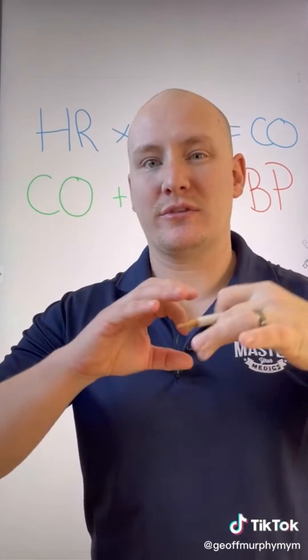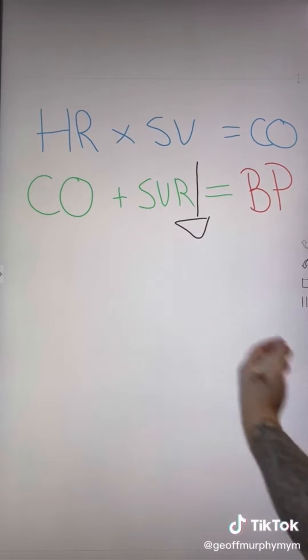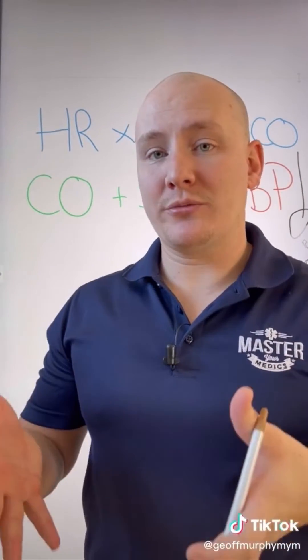Systemic vascular resistance is all about the fluid pressure against the vessels. We see vessel dilation, which creates a decrease in the resistance or pressure, ultimately leading to a decrease in blood pressure. That's the problem with neurogenic shock.